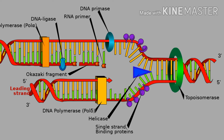Then we have DNA polymerases. DNA polymerase 1 is responsible for gap filling, and it also has exonuclease activity so that it can clip off the RNA primers from DNA strands. Then DNA polymerase 2 — its main function is DNA repair.